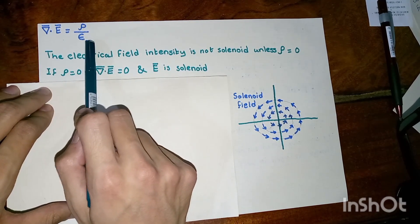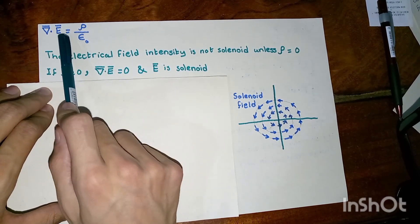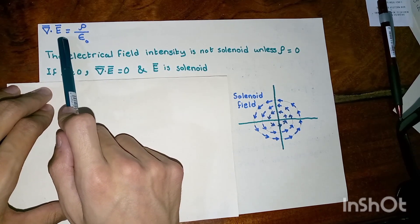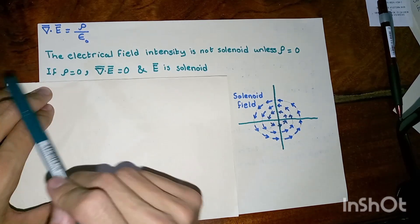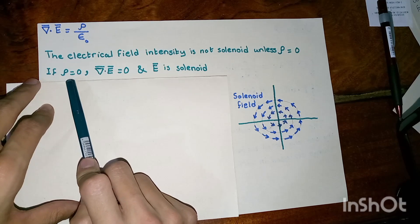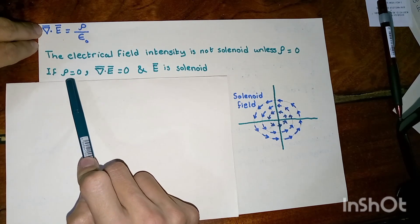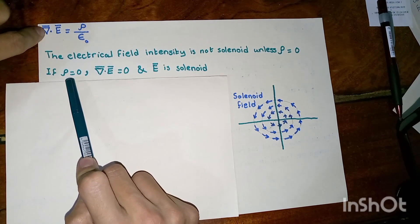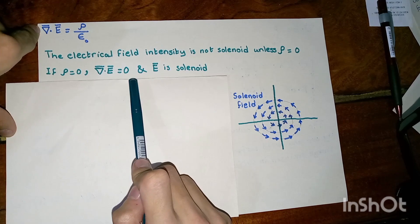When the charge density increases, the electrical field intensity is going to increase. And in neutral regions, when rho equals zero, this makes the divergence of the electrical field intensity to be zero as well.